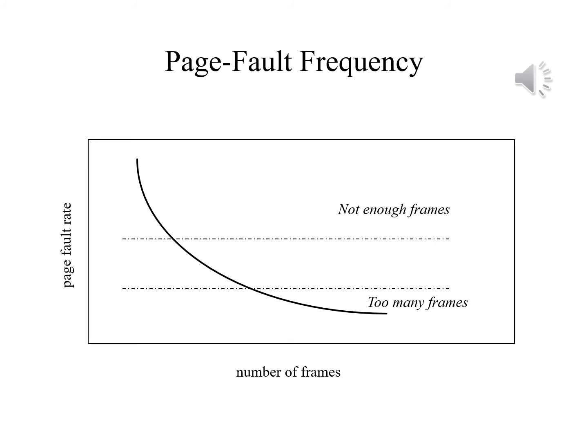As the graph shows, there is an inverse relationship between page fault rate and the number of frames. If the rate is too high, there are not enough frames allocated and we increase the number of frames allocated. If the rate is too low, there are too many frames and we are not using them to maximize throughput, so we will decrease the number of frames available.